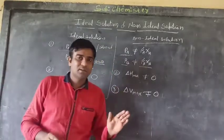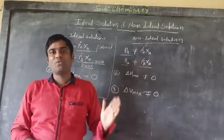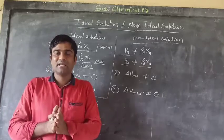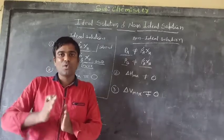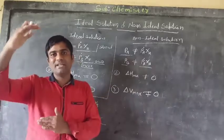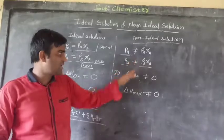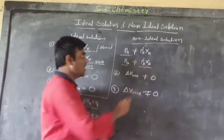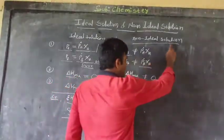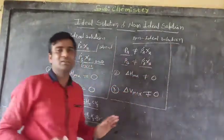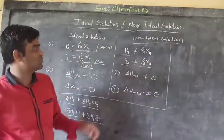When we mix solvent into solute, the volume will either increase or decrease. So delta V mixing is also not equal to zero. These three conditions apply to non-ideal solutions.